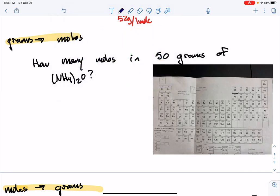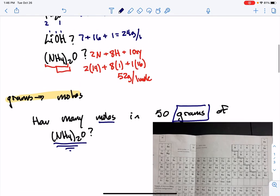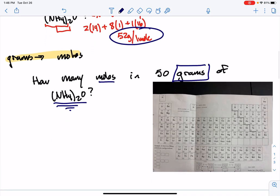So you'll have a question where it gives you grams and it asks for moles and it gives you a chemical formula. Now, I've already, in the previous video, found the mass of NH4O2. It was right here. It was 52 grams per one mole.